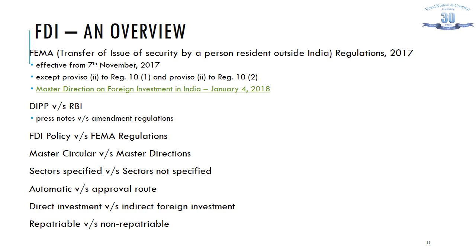Under the automatic route, investment can happen without seeking anyone's approval — it just needs to be reported. Under the approval route, before the investment is made and before shares are issued, approval of the competent authority is required. The relevant ministry governing that sector must approve the foreign investment before it is made in that particular sector.